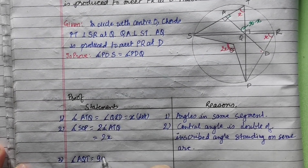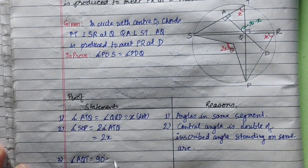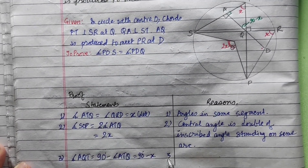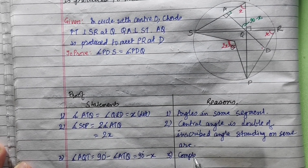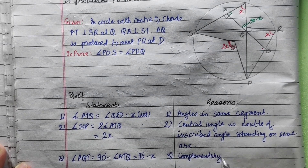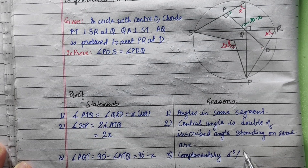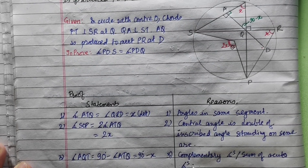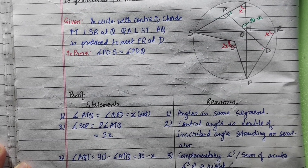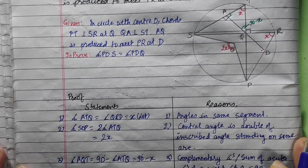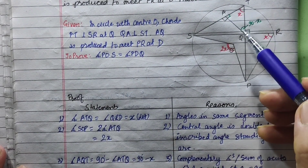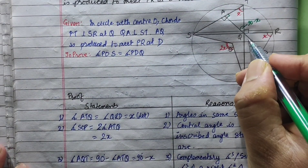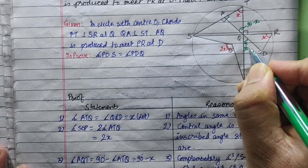Angle AQT is equal to 90 minus angle ATQ. Since ATQ equals x, angle AQT is equal to 90 minus x. These are complementary angles — the sum of acute angles in a right triangle equals 90.